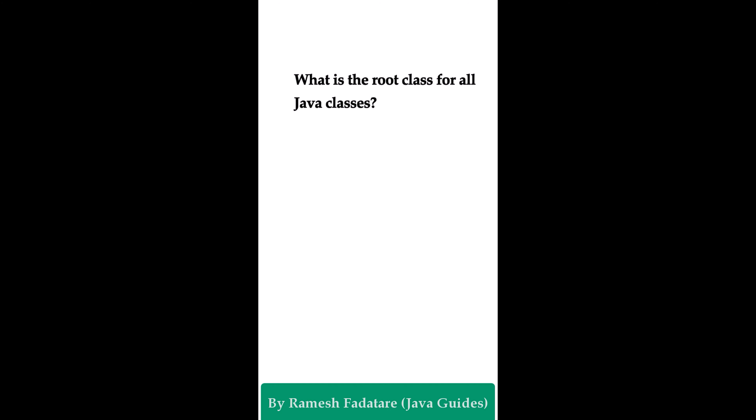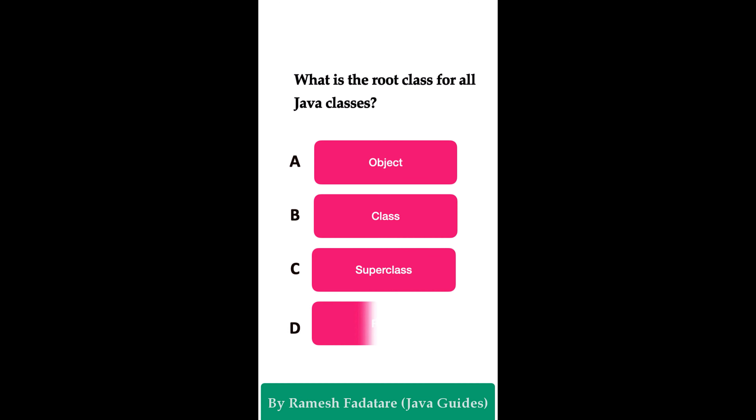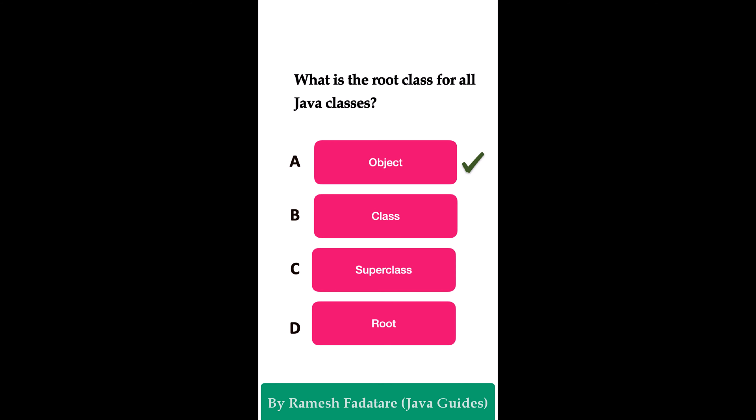What is the root class for all Java classes? Option A: Object class. Option B: Class. Option C: Super class. Option D: Root. The correct answer is the Object class. In Java, the Object class is the root class of the class hierarchy. Every class has Object as its superclass. When you create your own class, it implicitly extends the Object class, so you can override Object class methods and provide your own implementation.